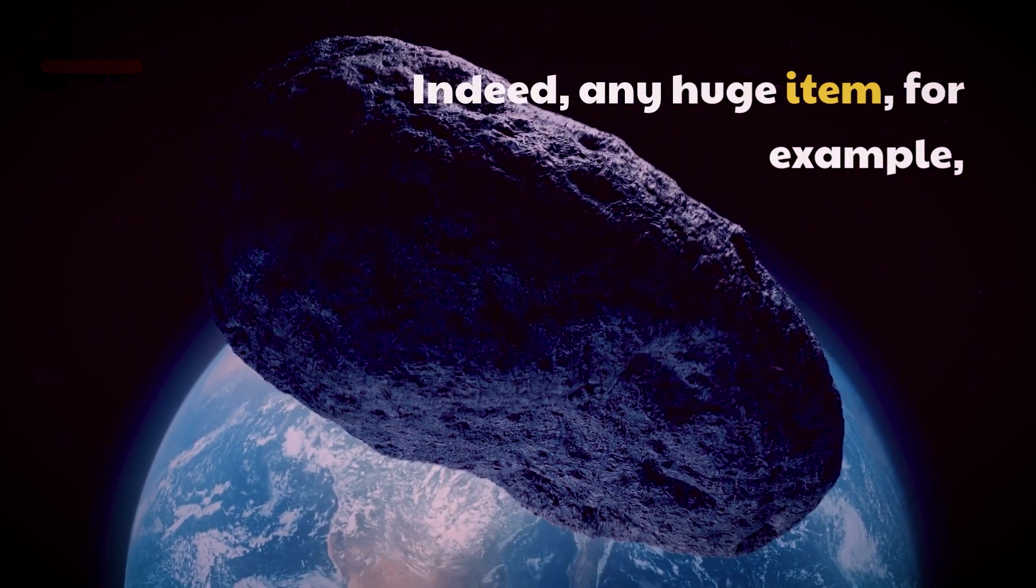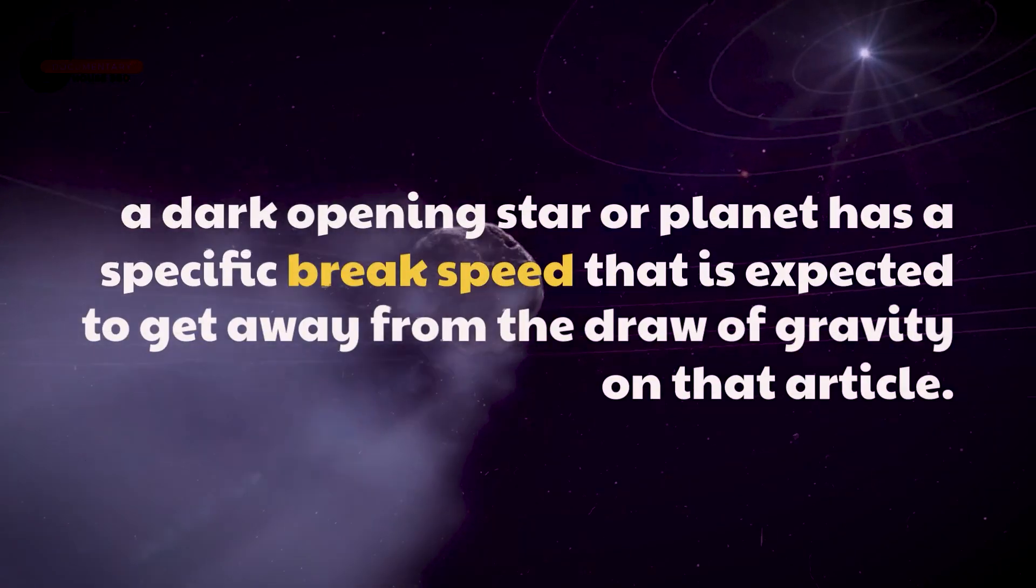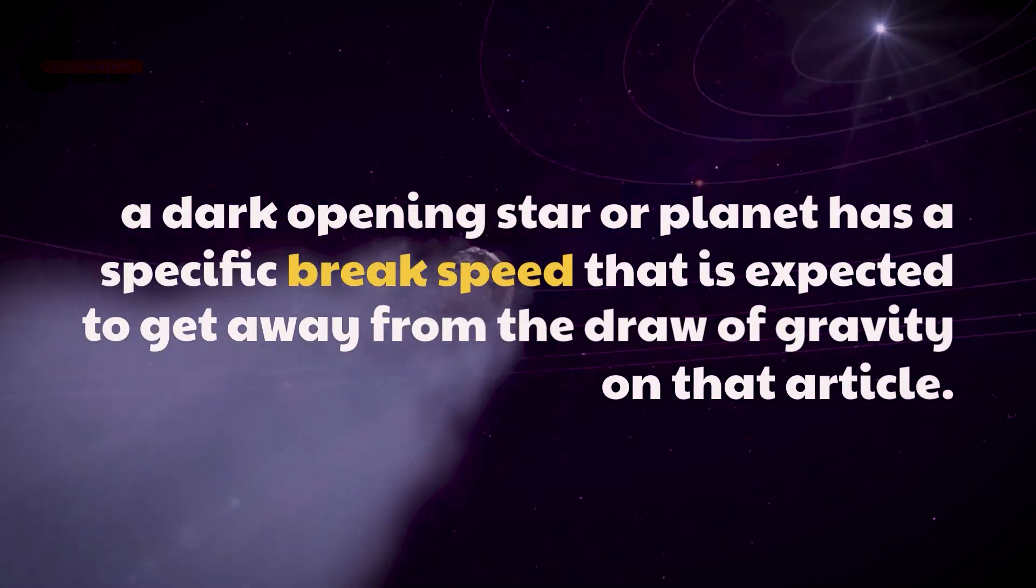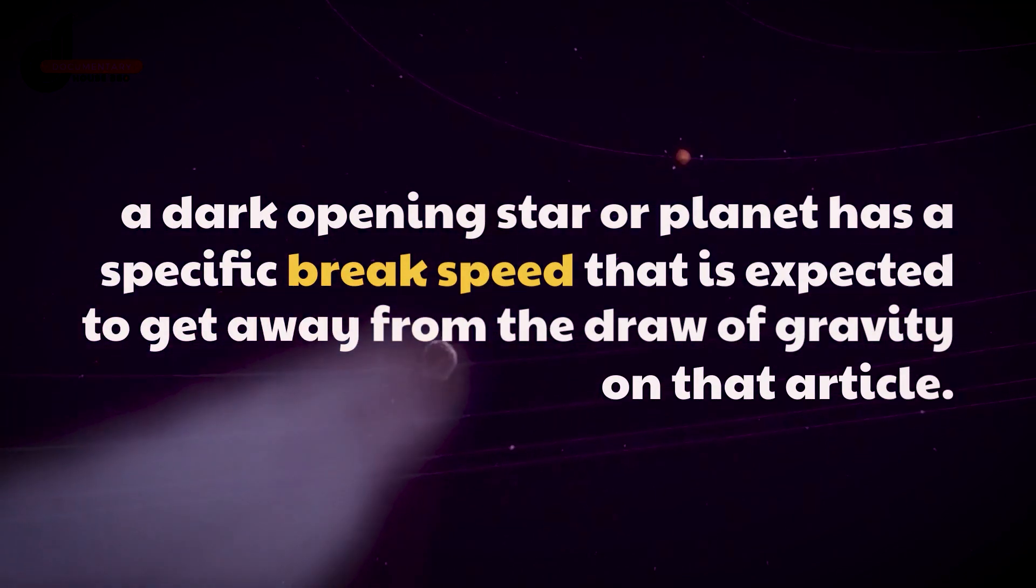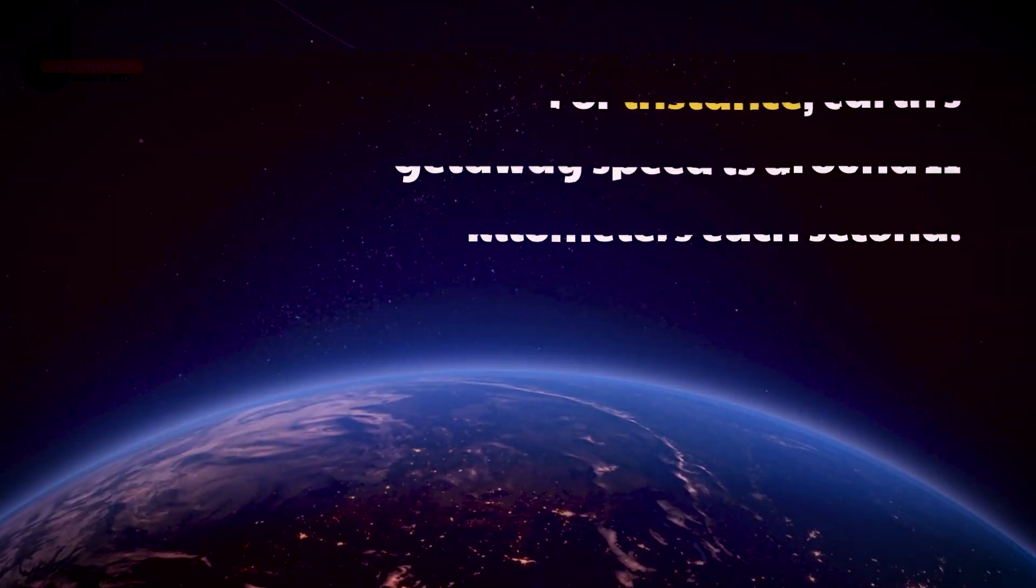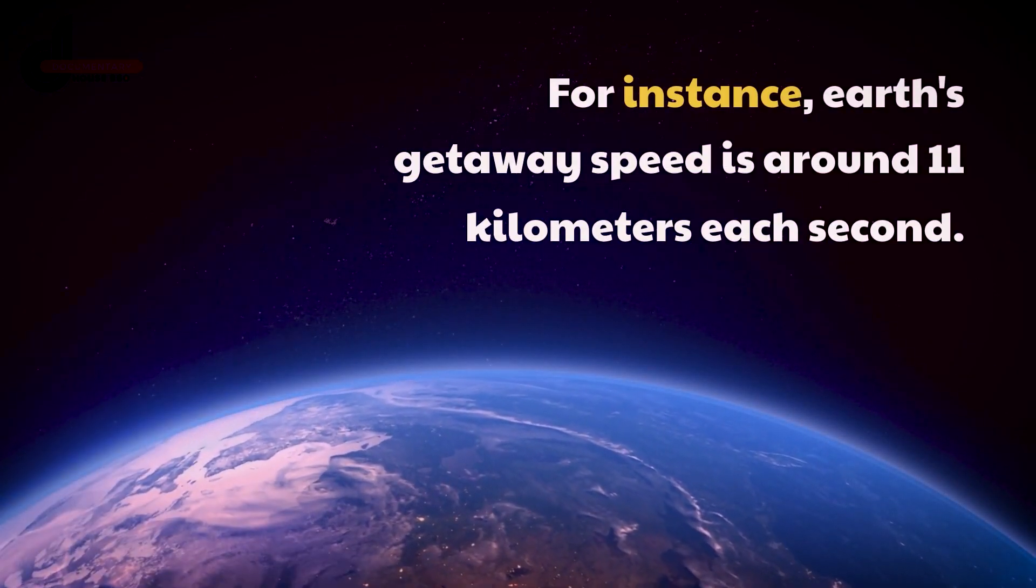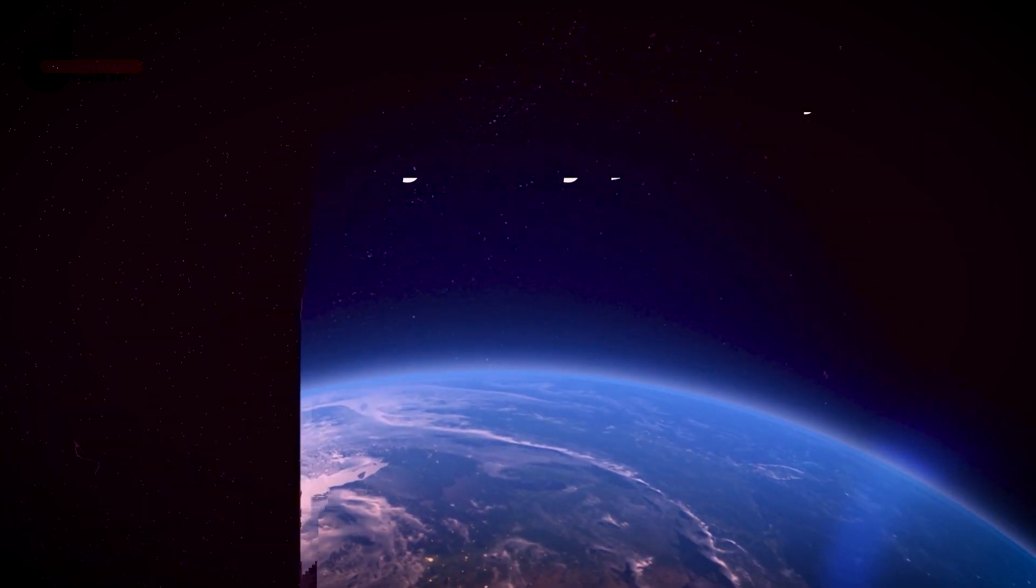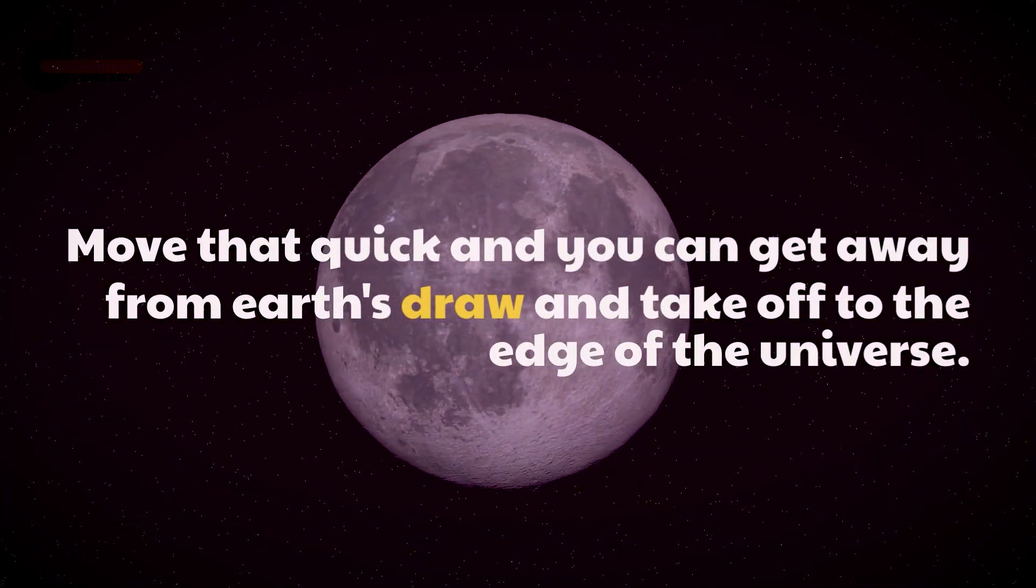Well, any huge object, such as a black hole, star, or planet, has a certain escape speed that is required to get away from the pull of gravity on that object. For instance, Earth's escape speed is around 11 kilometers per second. Move that fast and you can escape Earth's pull and take off to the edge of the universe.